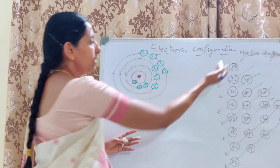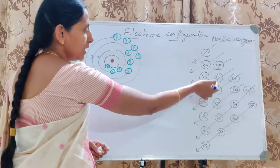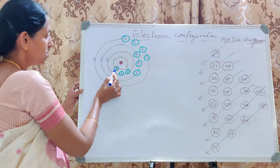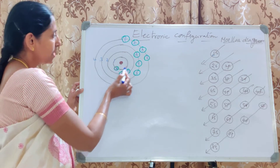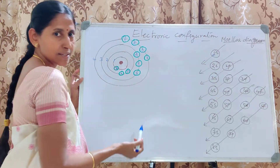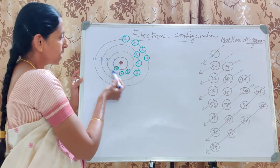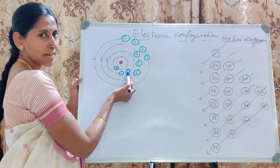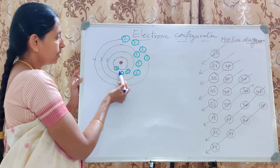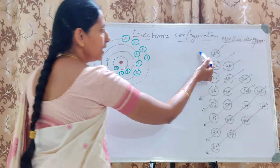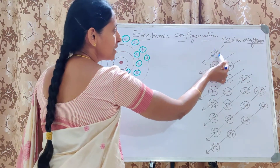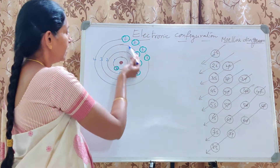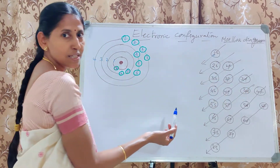These subshells are represented in the Moler diagram in the form of circles. This circle is the S subshell present in the first shell — that is why it is written as 1S. The same S subshell in the second shell is represented as 2S. The P subshell in the second shell is called 2P. So in the first shell only one circle for 1S; in the second shell two circles for 2S and 2P; in the third shell three circles for 3S, 3P, 3D.